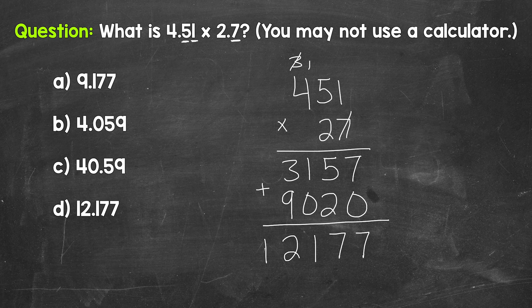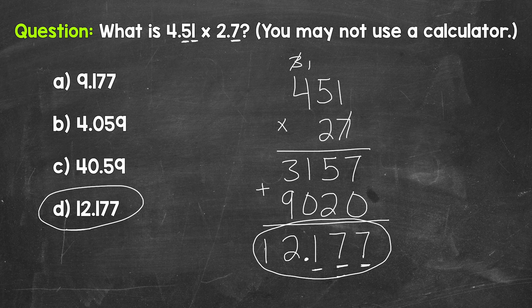That means our answer needs to have three decimal digits. Three digits to the right of the decimal. So one digit, two digits, three digits to the right of the decimal. The decimal goes in between the two and the one. And this is our final answer. 12 and 177 thousandths, which that is choice D.